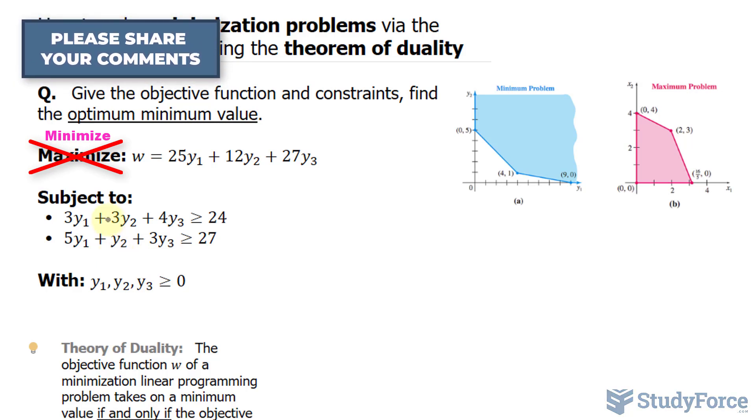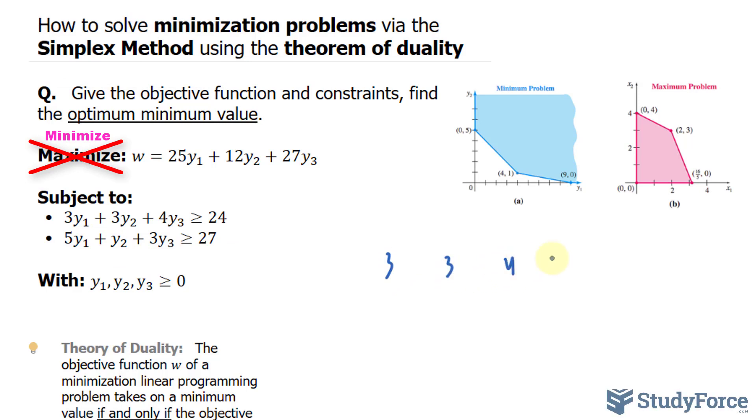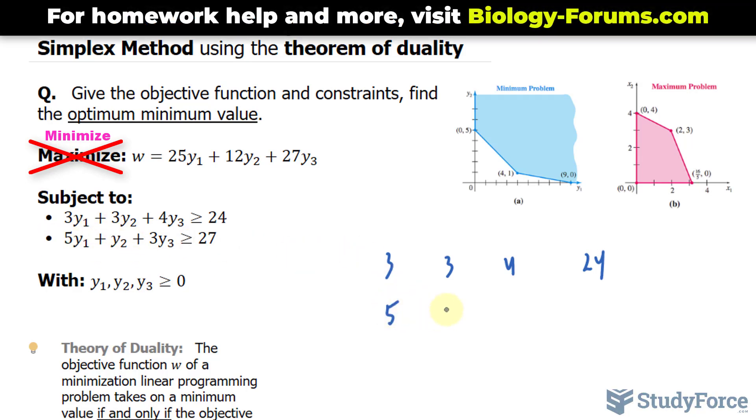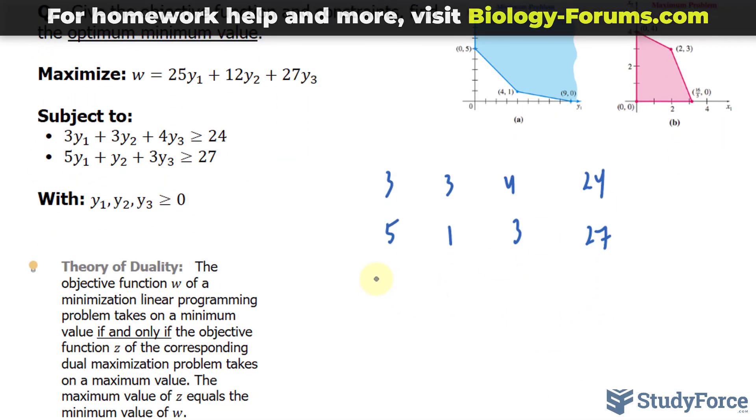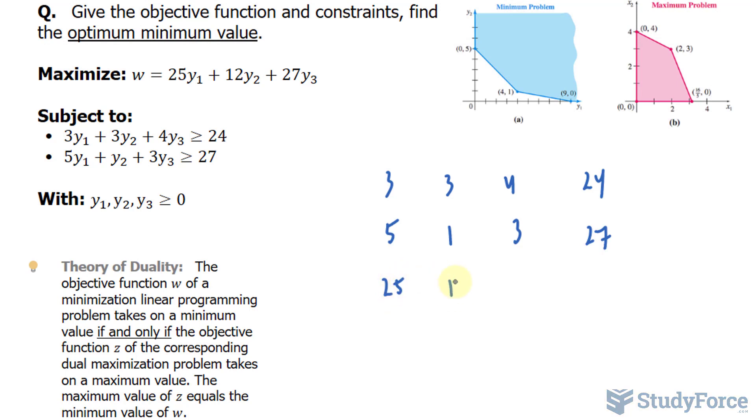So I'll start with this constraint: I'll write down 3, 3, 4, and 24. So this column's for y₁, y₂, y₃, and my constants. And then for this one, we'll write down 5, 1, 3, 27. And for my objective function, I have 25, 12, 27, and no constant, 0.